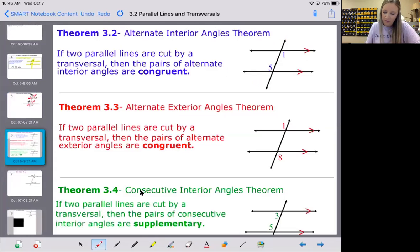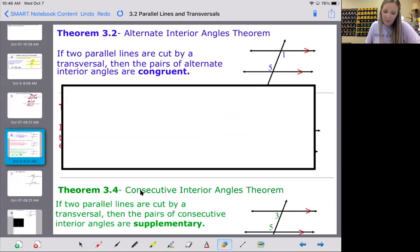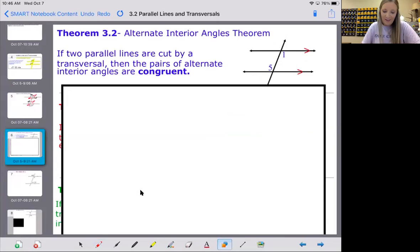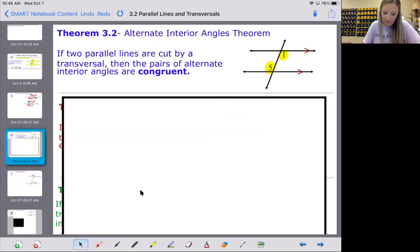We've got three more theorems. I'm going to just go over them real quickly. The first one is the alternate interior angles theorem. Essentially what it says is if you have parallel lines that have alternate interior angles, they are congruent. Angle one is congruent to angle five because they are on alternating sides of the transversal. They are both interior of the two parallel lines.